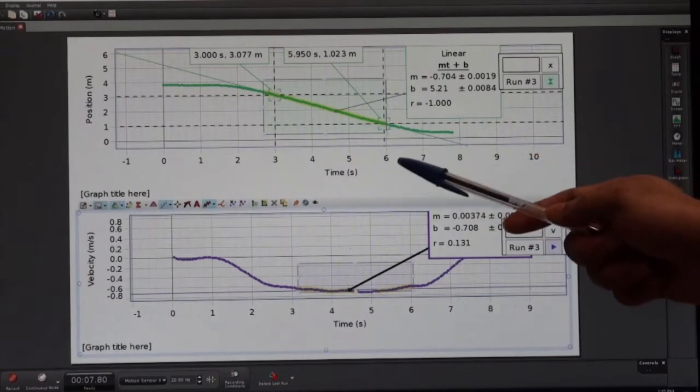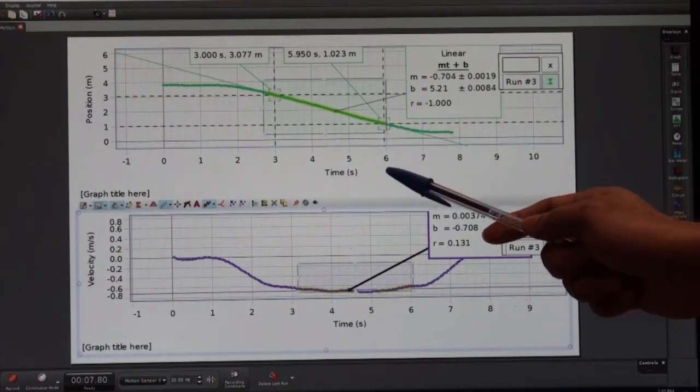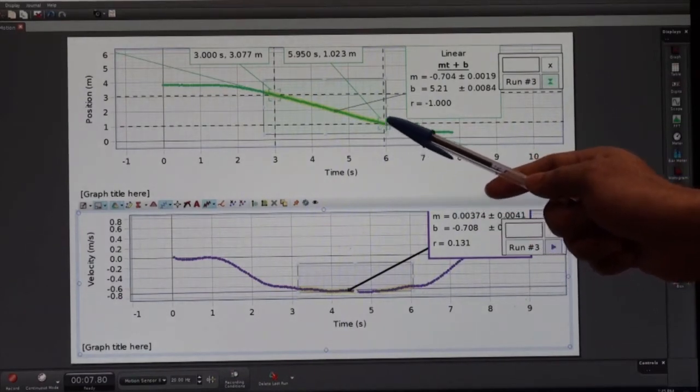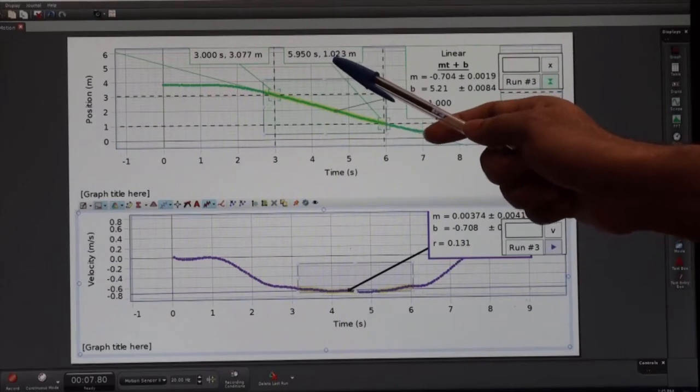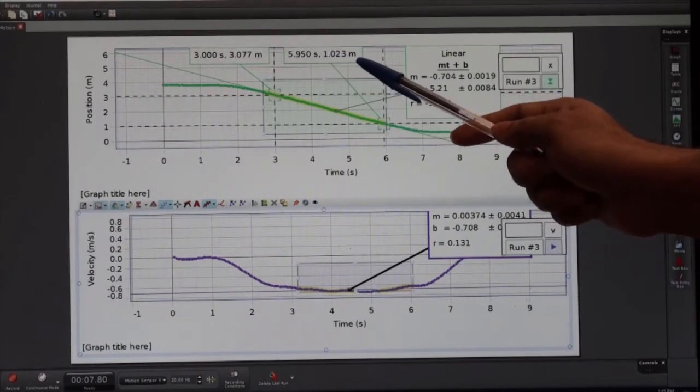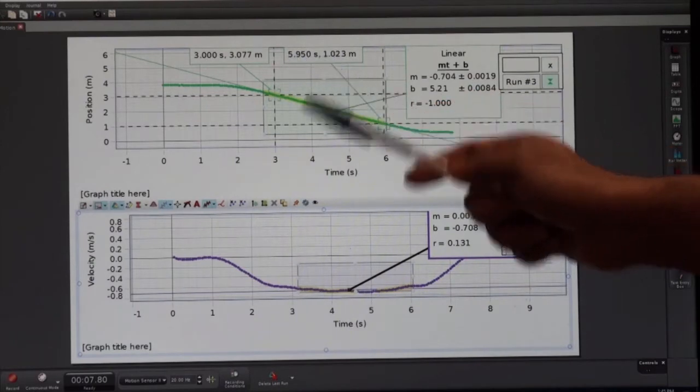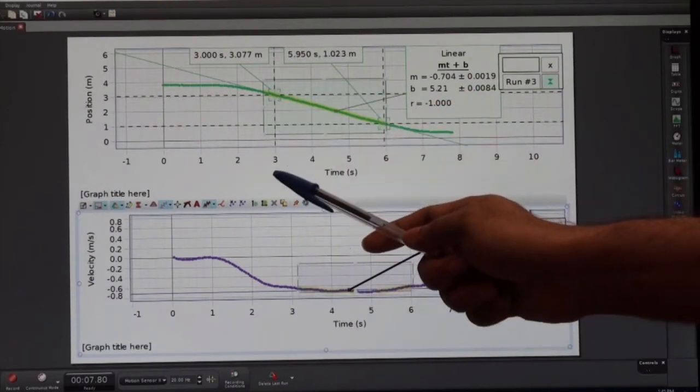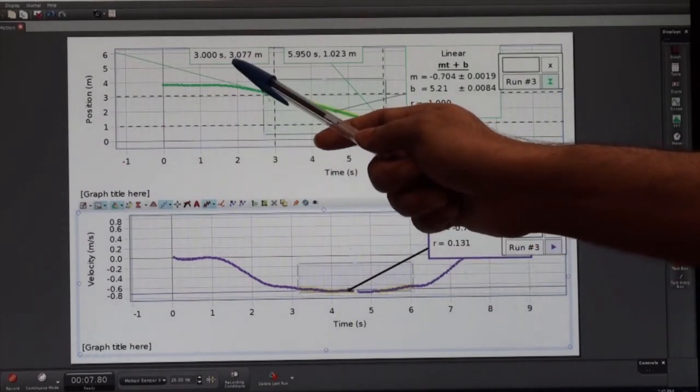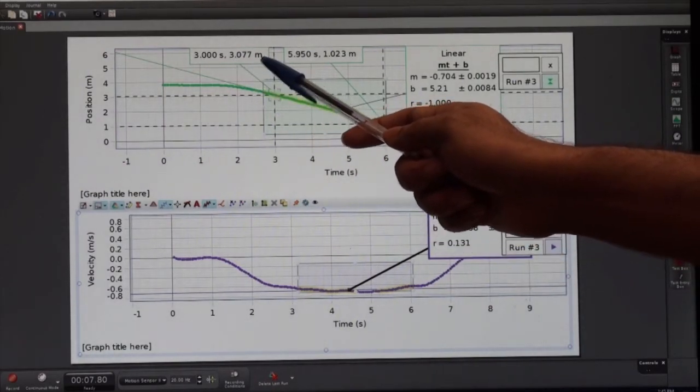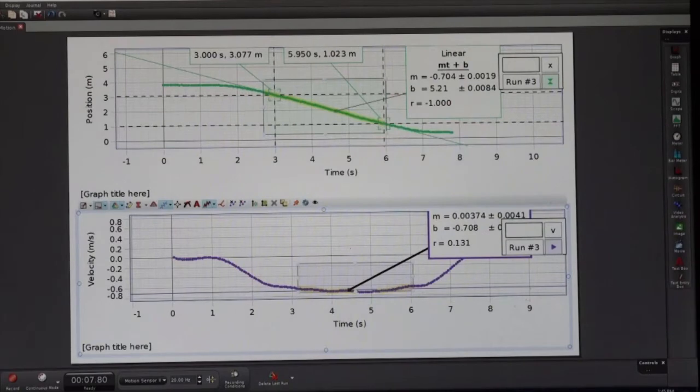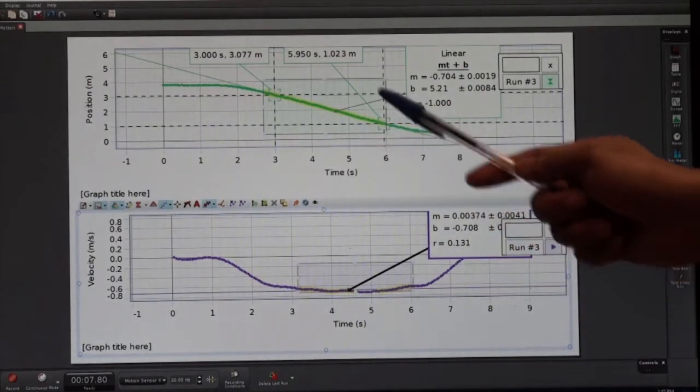You see that a point at six seconds, the position is 1.023 meters at time 5.950 seconds. Another point at three seconds, you see that the distance is 3.077 meters at 3.00 seconds. Using these two points you can find the slope.